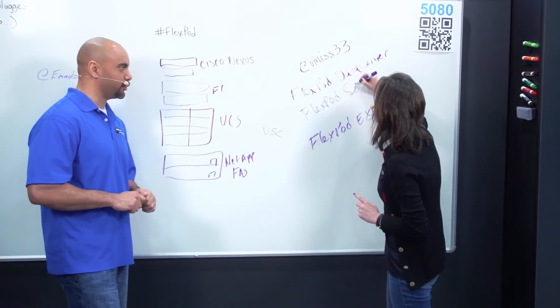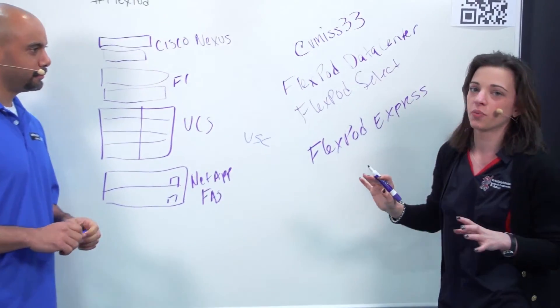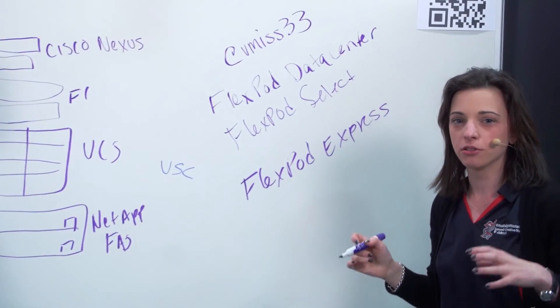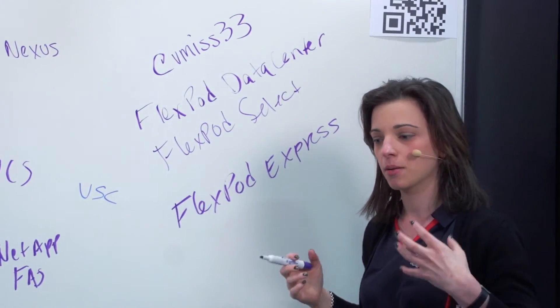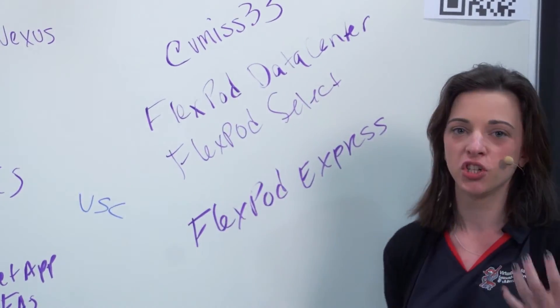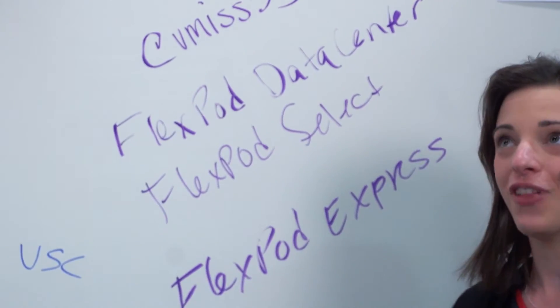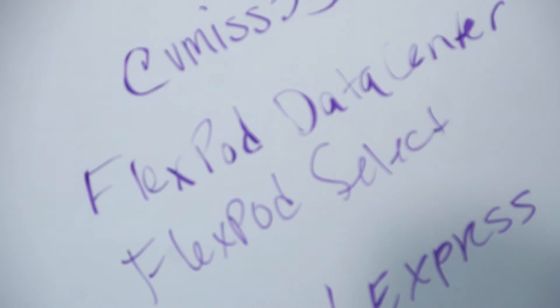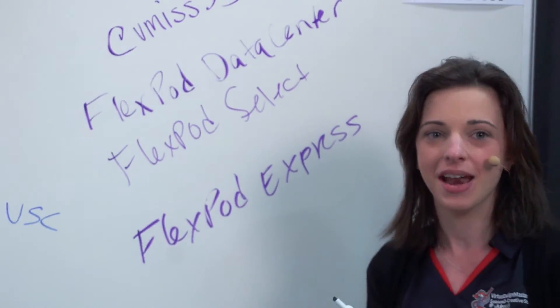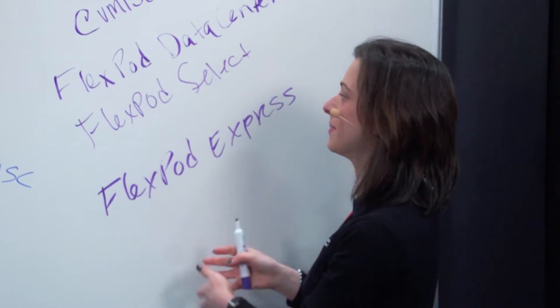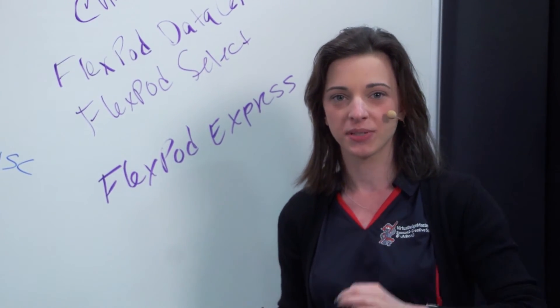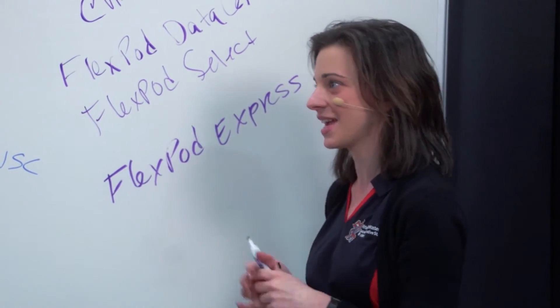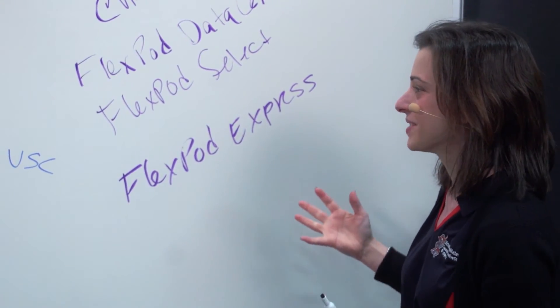Okay. So what does FlexPod Select do? FlexPod Select is your really high performance solution with a very specific purpose. So for example, we have a Hadoop reference architecture with FlexPod Select. So that's geared to be very super high performance Hadoop. And we also have an SAP HANA type appliance coming out. Again, very application specific for a specific use case. So that kind of sums it up.